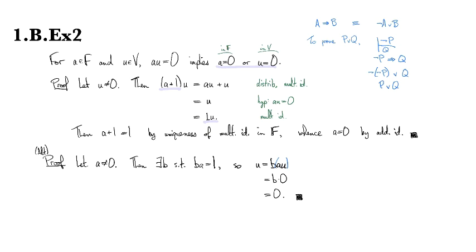Okay, so let's just write in those justifications there. This is by the multiplicative inverse property in the field, and then this is by the hypothesis that a·u is equal to zero.